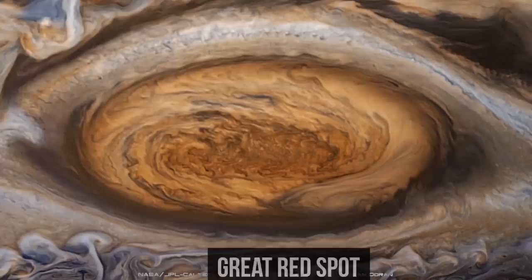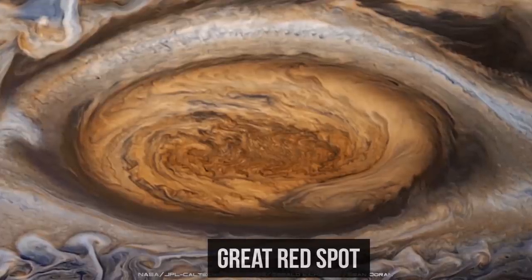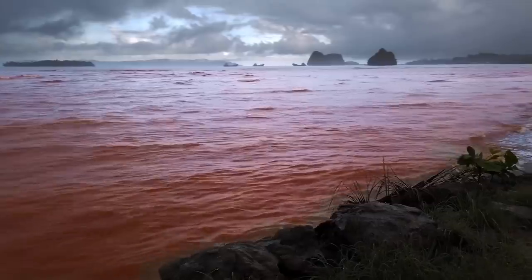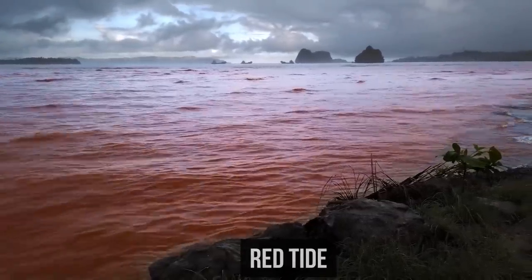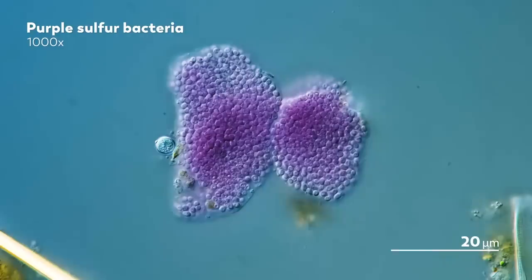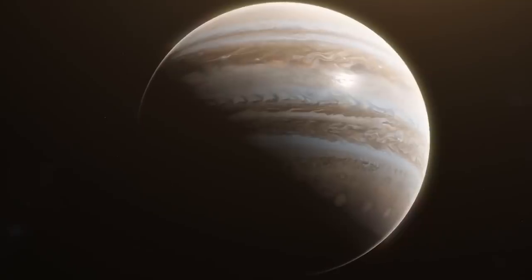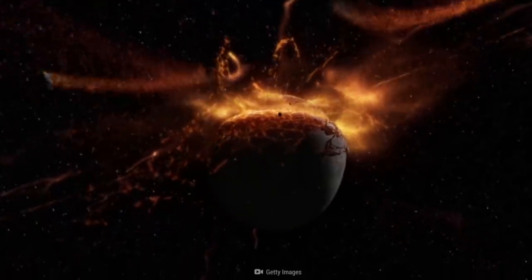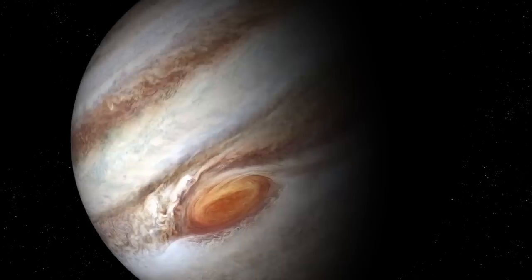Perhaps it was also when bacteria made their way to it. That would explain, for example, the nature of the Great Red Spot. It may well be the accumulation of purple sulfur bacteria. On our planet, they color the water during red tides. At the same time, purple bacteria can feed on molecular hydrogen and hence multiply in Jupiter's atmosphere.